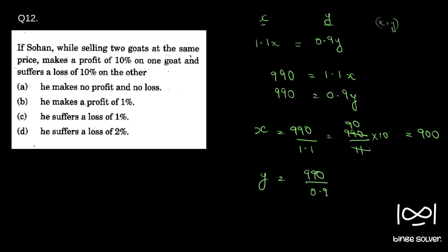So we got our x and y. So x plus y becomes 2000. The 2000 is x plus y, which is the original price of two goats he sold.